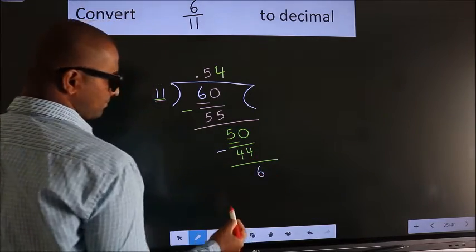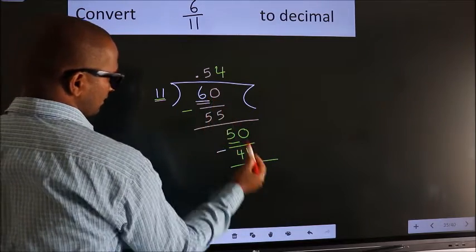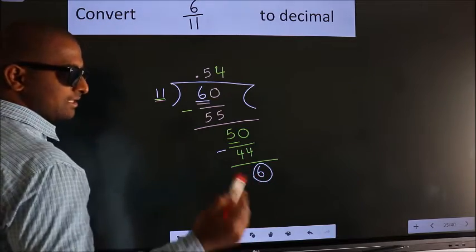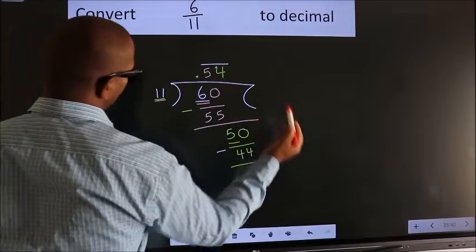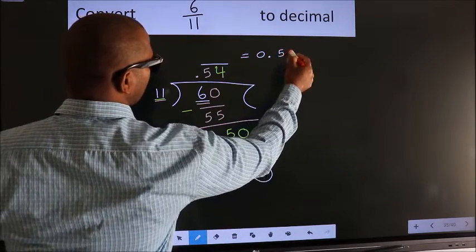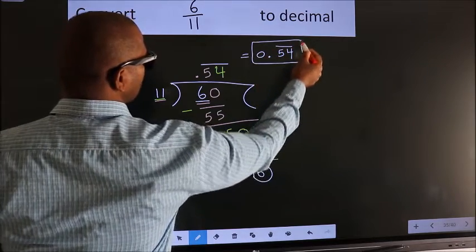Remember earlier we had 6, and we got 6 again. That means we get a bar on these two numbers. Therefore, our answer is 0.54 with a bar on these two numbers. This is our answer.